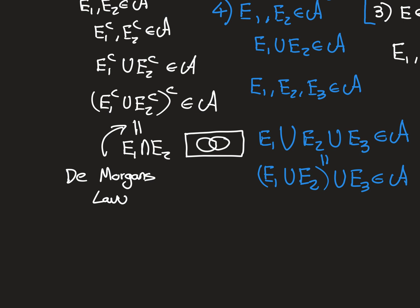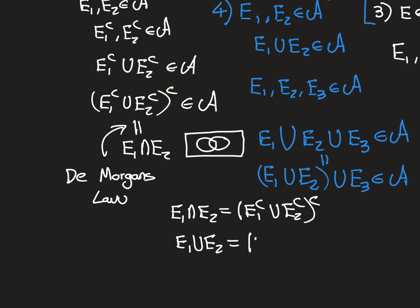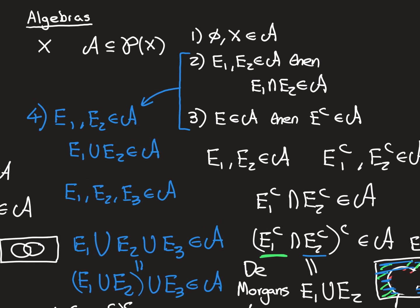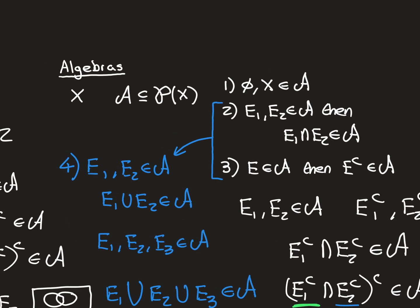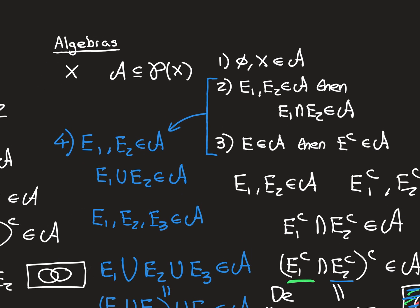So we've just seen both of De Morgan's laws. One is: e1 intersect e2 equals the complement of (e1 complement union e2 complement). The other is: e1 union e2 equals the complement of (e1 complement intersect e2 complement). We've used those to show that properties two and four are interchangeable in the definition of an algebra. That's all I wanted to say in this video: algebras are also closed under finite unions. Thank you.